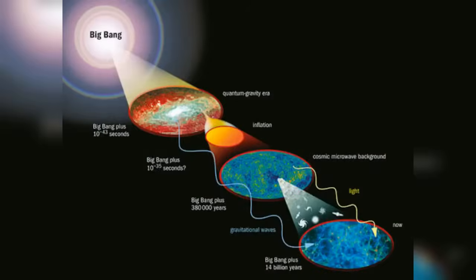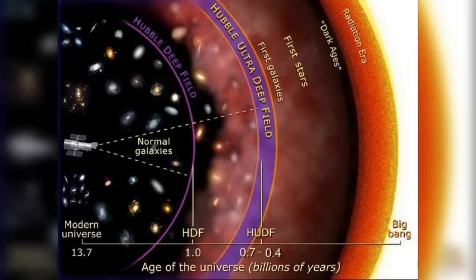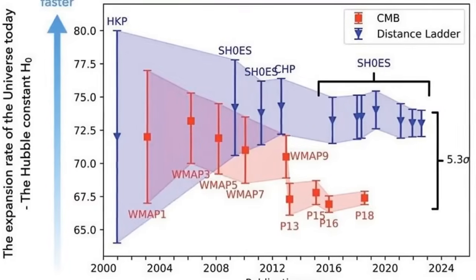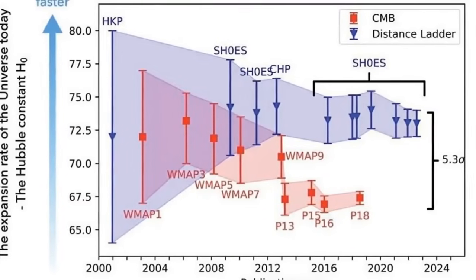On the other hand, early universe measurements are derived from observations of the Cosmic Microwave Background Radiation, CMB, the afterglow of the Big Bang. By studying the slight fluctuations in temperature and polarization of the CMB, scientists can infer not only the age of the universe but also its rate of expansion. The crisis emerged when astronomers realized that these two methods were giving significantly different values for the Hubble constant.